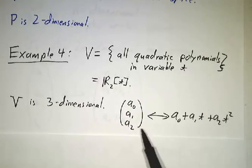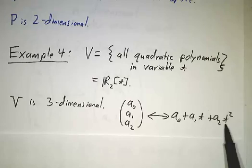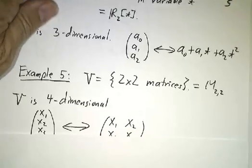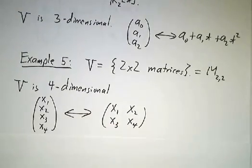It's isomorphic to the set of all three tuples of numbers. How do you add two polynomials? You add the coefficients. How do you rescale a polynomial? You rescale the coefficients. So that means it's a three-dimensional vector space.